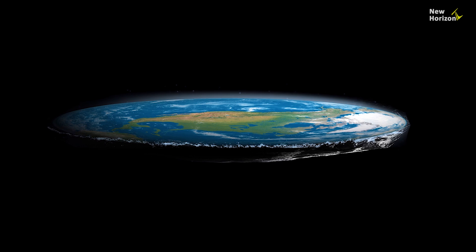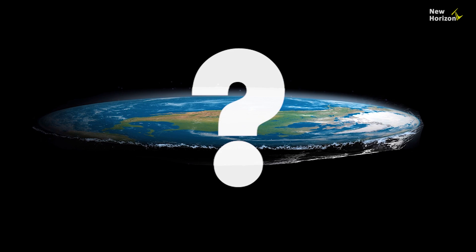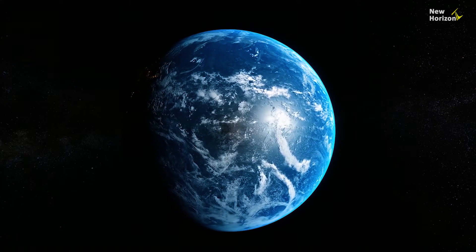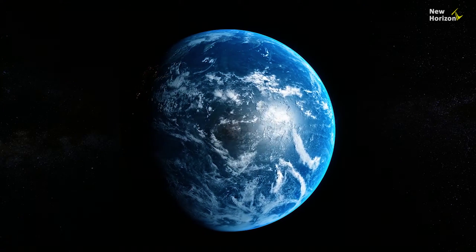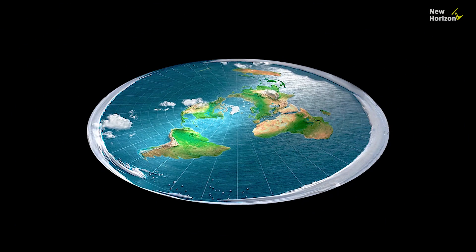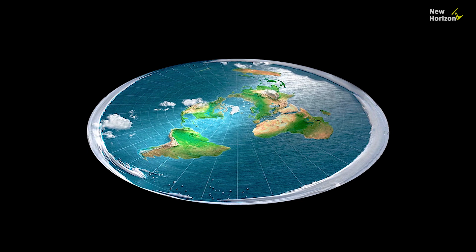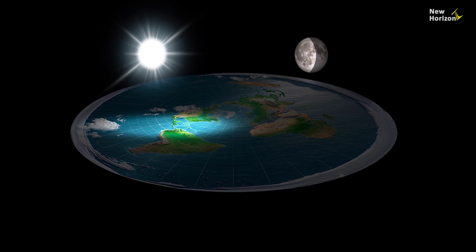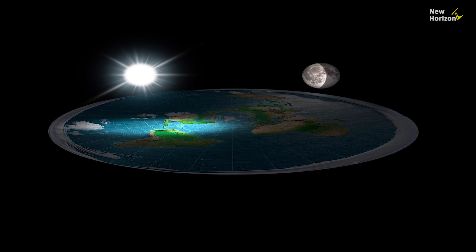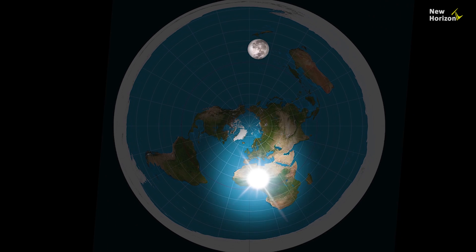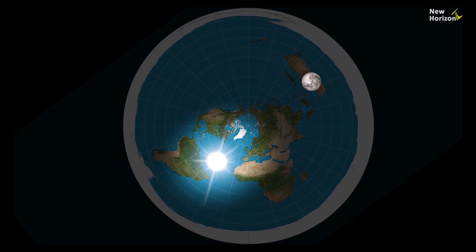First, let's know what the flat earth model is. According to the flat earth theory, the Earth is not spherical but disc-shaped. Earth is stationary — it neither rotates nor revolves around the Sun. Earth is the center of the universe. The Sun, Moon, and stars are orbiting Earth.